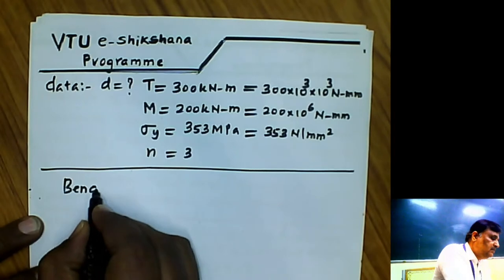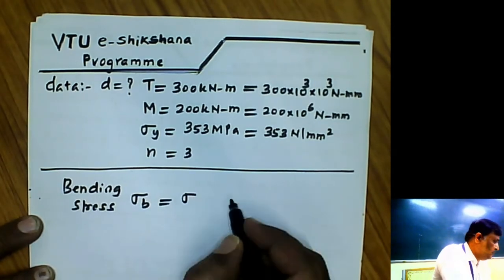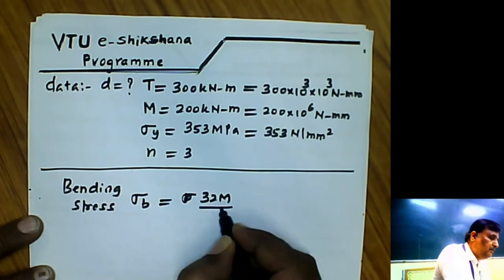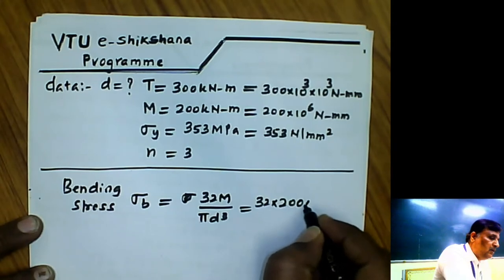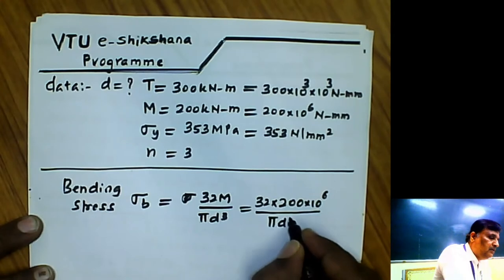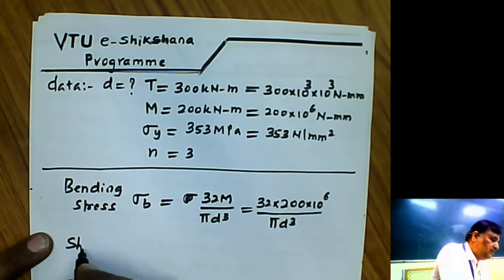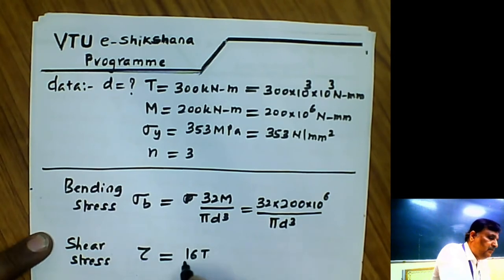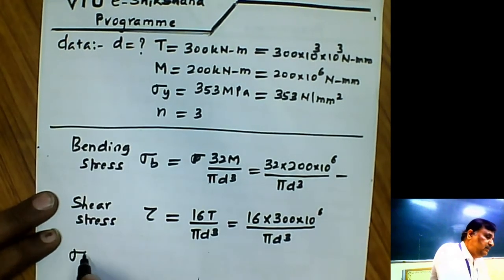First, we will find the bending stress. Bending stress σ_B = 32M / (πD³) = (32 × 200 × 10⁶) / (πD³). Similarly, the torsional shear stress τ = 16T / (πD³) = (16 × 300 × 10⁶) / (πD³). Both bending stress and shear stress are expressed in terms of the unknown diameter D.